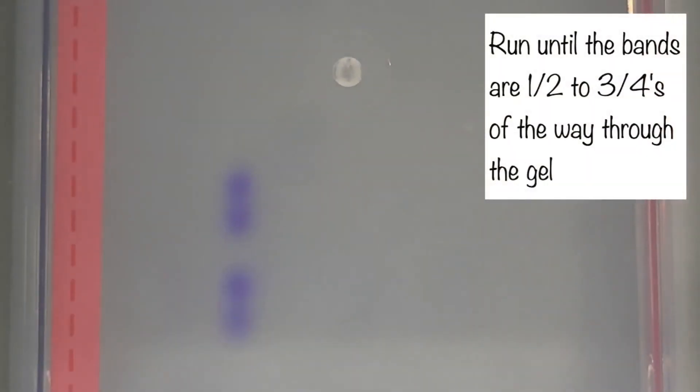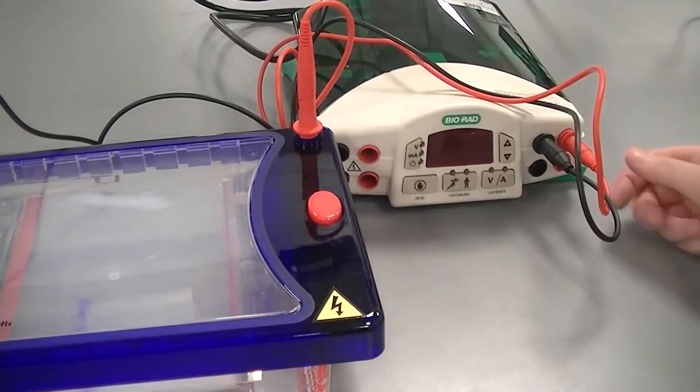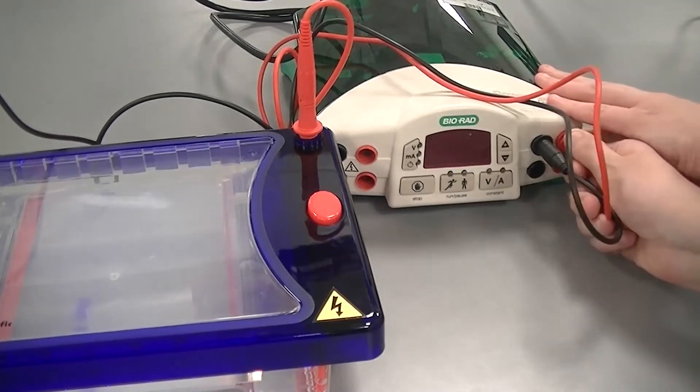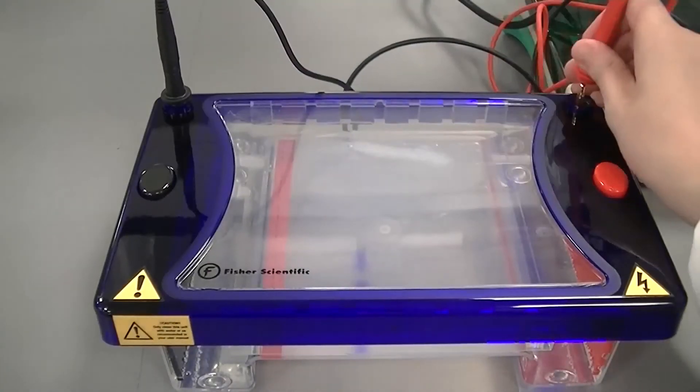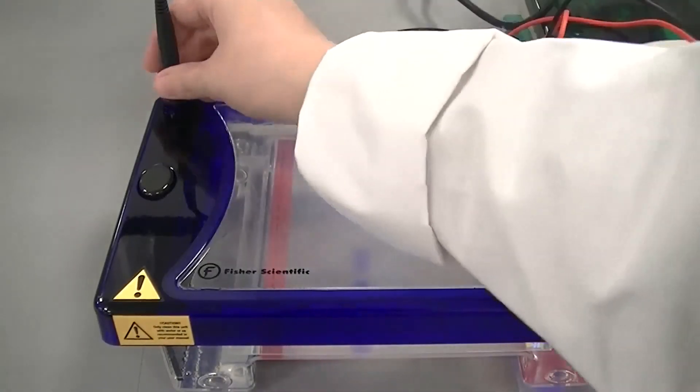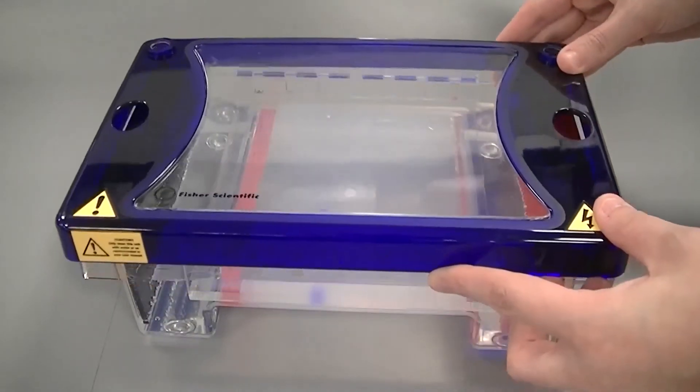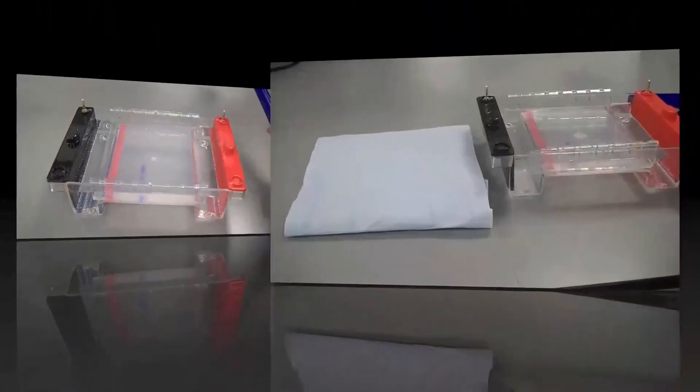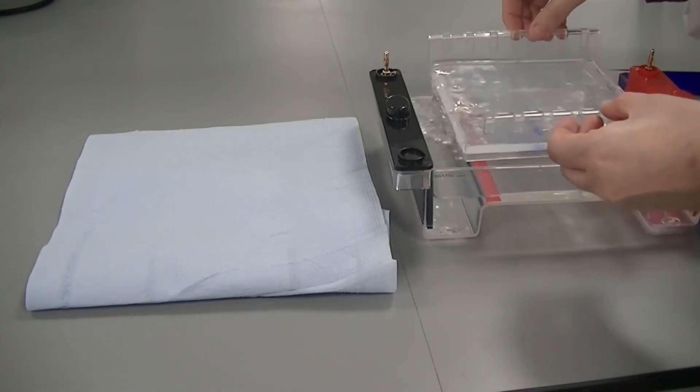When the gel is finished running, turn off the power pack and remove the wires. Carefully remove the lid from the gel tank. Lift out the casting tray with the gel and drain off any excess TAE buffer carefully. Then place on a paper towel. Your gel is now ready for imaging.